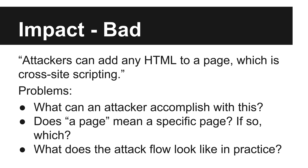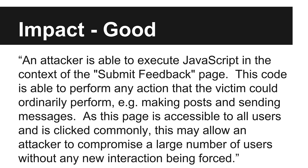Now let's look at a bad impact statement: attackers can add any HTML to a page, which is cross-site scripting. So what? What can an attacker actually do with that which affects the business? Is a page some specific page? What does a real-world attack actually look like here? Again, we answer those exact questions to fix this. We explain that an attacker is able to execute code in the context of the submit feedback page, allowing them to hijack a victim's browser to perform any action they can perform — for instance, making posts or sending messages. These are examples that someone evaluating the impact to the business can see and understand immediately.